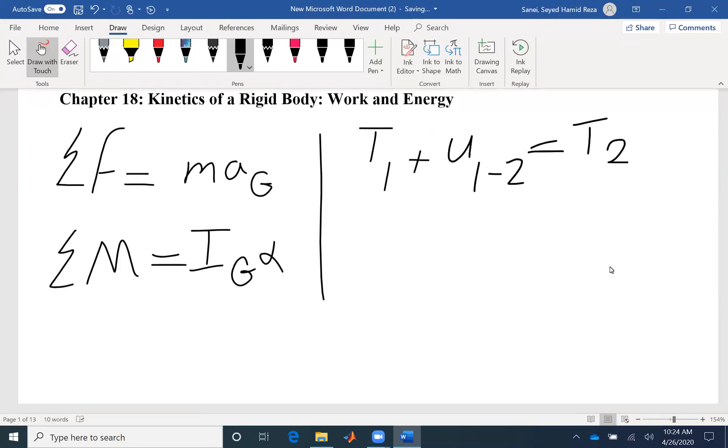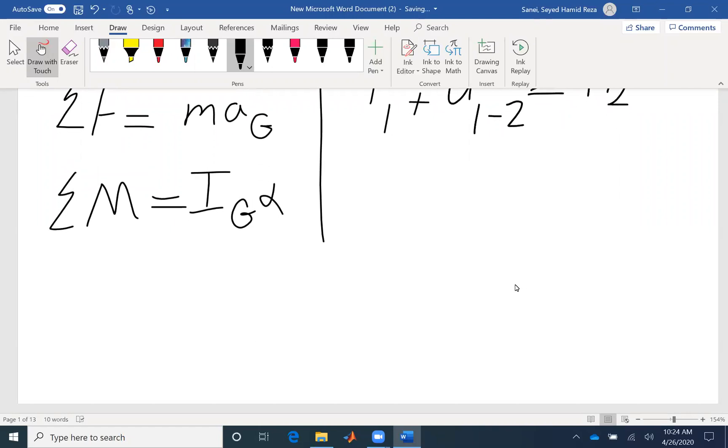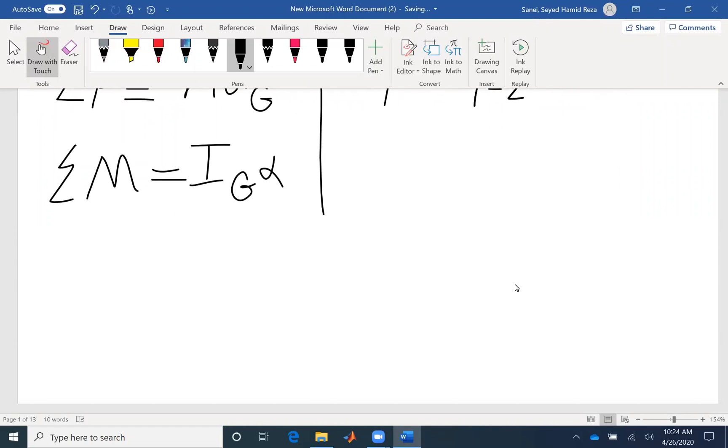So we need to first identify what is kinetic energy for a rigid body. Let's say we have an example here of a rigid body that is rotating about point O. The velocity at this point is VG and we have rotational velocity omega.